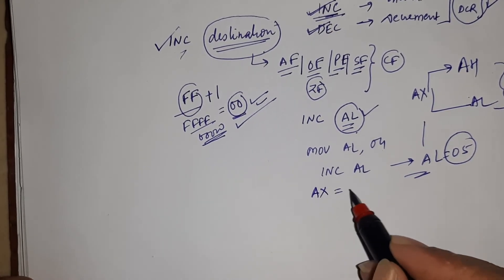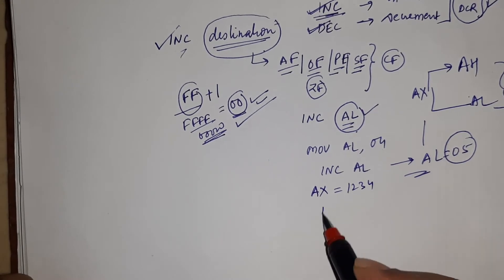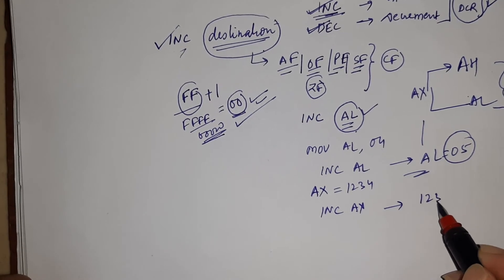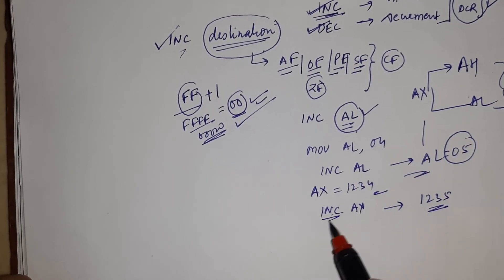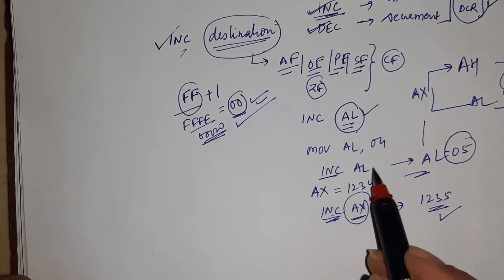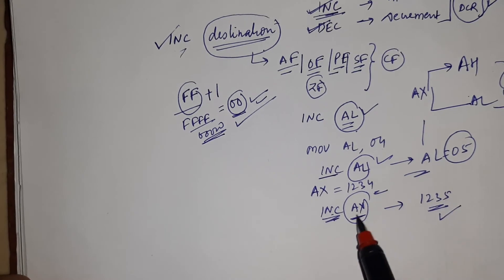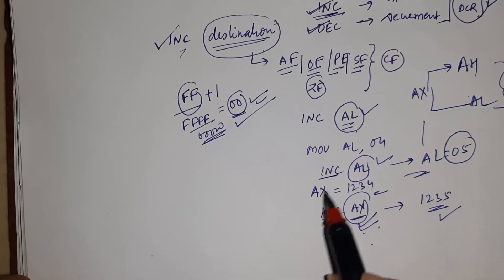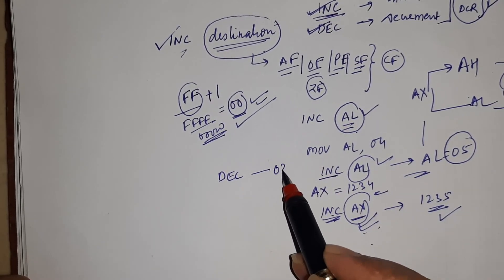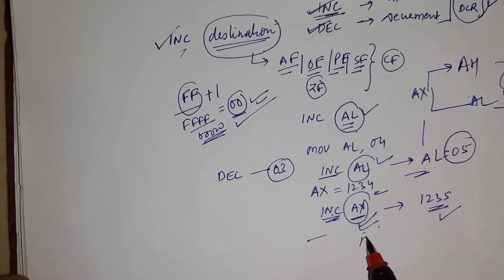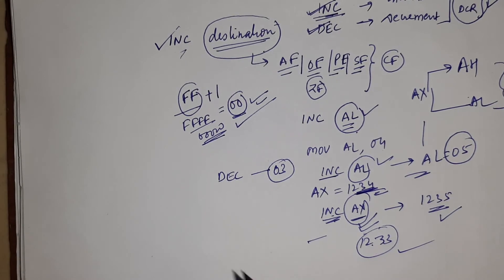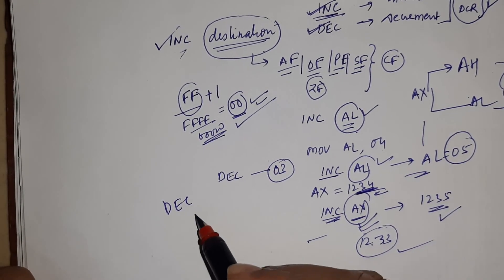Now suppose AX equals 1234. And now INC AX. Then what will be the content? 1235. So here you can see this will increment the content of AX by 1. This is applicable for 8-bit here and this is also applicable for 16-bit here. And if you write DEC, then what happens? 04 will become 03, and this will become 1233. So basically DEC is used for decrement.